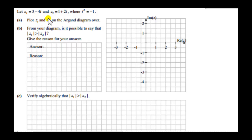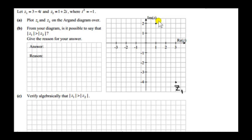Z1 is 3 minus 4i, Z2 is 1 plus 2i. Let's plot those. The real part of Z1 is 3 and the imaginary part is minus 4. The real part of Z2 is 1 and the imaginary part is plus 2. So this point is the complex number 1 plus 2i.